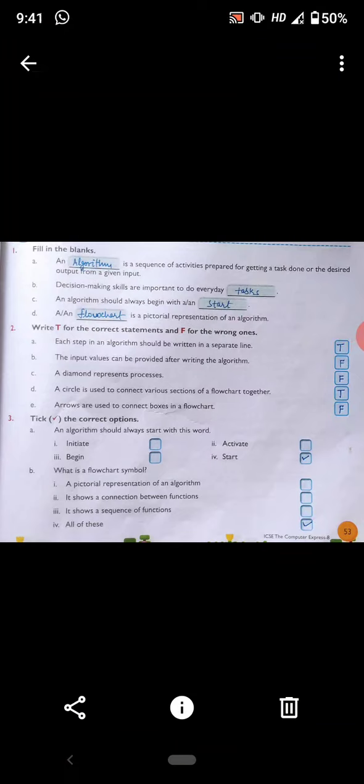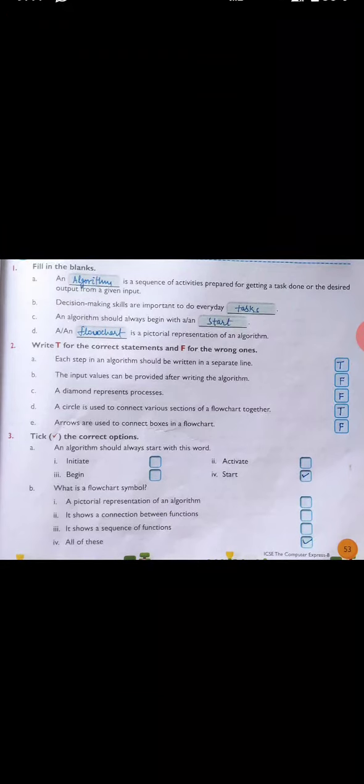So that's an algorithm. Second part: Decision-making skills are important to do everyday tasks. Third: An algorithm should always begin with start. D: A flowchart is a pictorial representation of an algorithm. So you should complete these fill in the blanks.